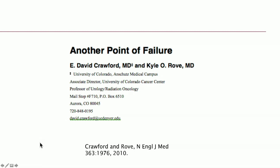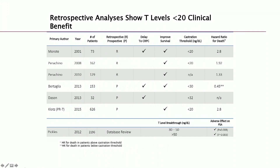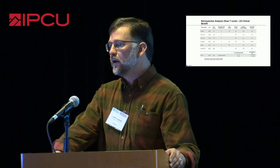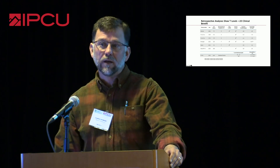Dr. Crawford and Rove had an article in 2010 in the New England Journal, where they compellingly argued that not only are we failing to drive the testosterone to true castrate levels, but we're also failing to drive the testosterone as low as possible — which is where we have a true therapeutic benefit. In retrospective review, there are a number of papers that have looked at castrate levels being 20. The problem is most of these papers are either retrospective or small numbers. Nevertheless, every one of them shows either improvement in survival of patients who have a testosterone less than 20, or a delay to castration resistance, or both.